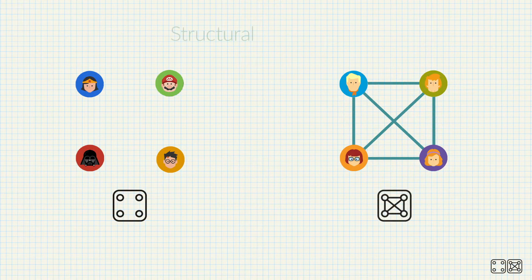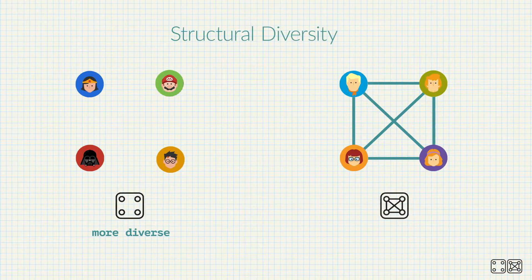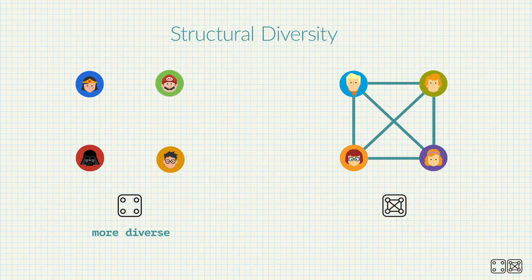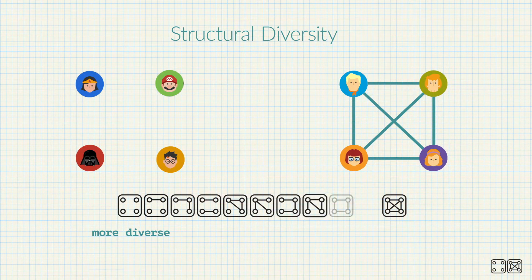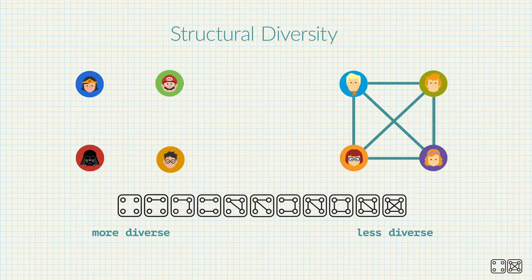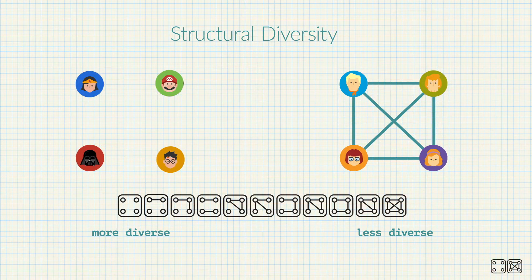In the first scenario, Alice and Bob's common neighbor subgraph is more diverse, because their mutual friends don't know each other. As these friends form connections, the subgraph diversity decreases, until we reach the second scenario, where Alice and Bob's common neighbor subgraph is less diverse, because their mutual friends all know each other.